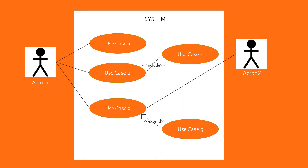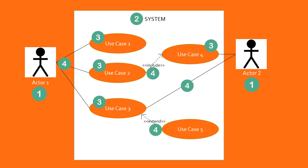Now let's look at the use case diagram again and identify the four components we discussed. Number one: the actors — the primary actor is on the left and the secondary actor is on the right. Number two: the system, indicated here, forms the solution scope. Number three: these are the oval-shaped icons representing the features the system needs to possess. And number four: these are the associations showing the relationship between the actor and the use cases, and the relationships between the use cases themselves.